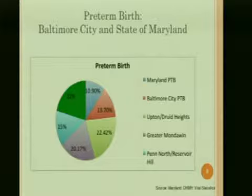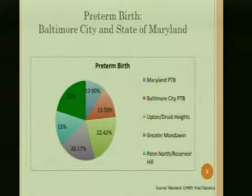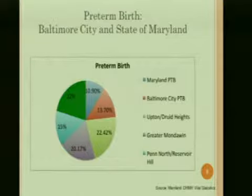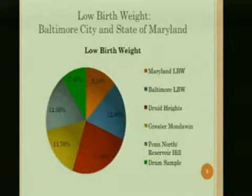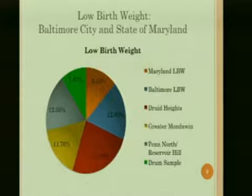Looking at data on preterm birth — defined as birth of a baby before 37 weeks — we can compare the state of Maryland rate with Baltimore City's preterm birth rate and some specific communities within Baltimore that DRUM encompasses in its geographic catchment area. We can also look at low birth weight, defined as birth of an infant less than 2,500 grams, comparing Baltimore City to the state of Maryland. Baltimore has extremely high rates, and when you look at different neighborhoods within the city, the disparity is even greater.